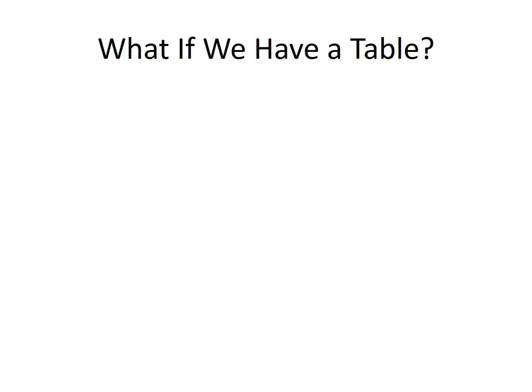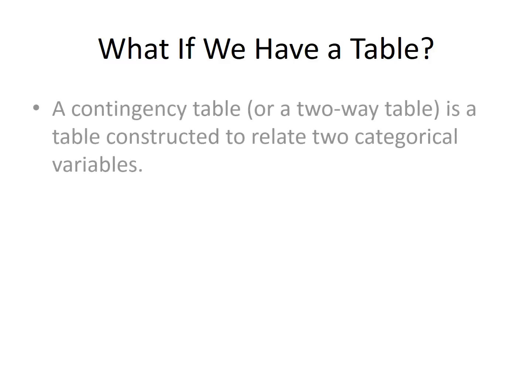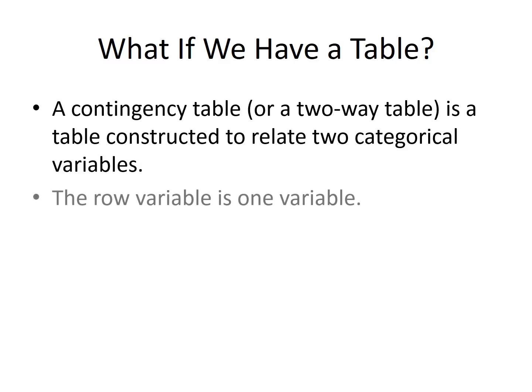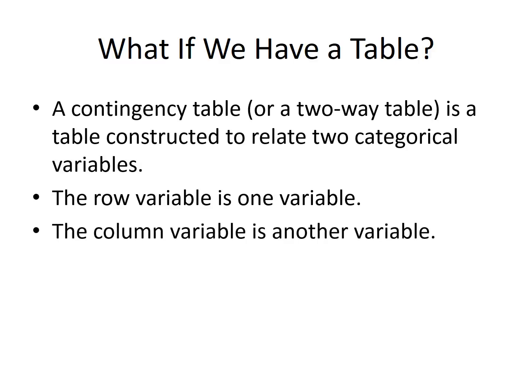But what if we have a table where we don't have just a list of values, but an actual table of values? A contingency table, or a two-way table, is a table constructed to relate two categorical variables. The row variable will be one variable, and the column variable is another one of these categorical variables.